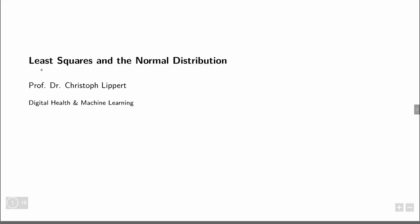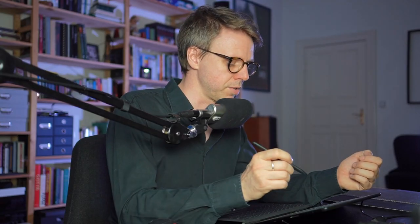Today, we will look again at the normal distribution, but in the context of linear regression. That will be quite useful because we will learn what it means to do least squares, because it really means that we assume that our data in some sense is normally distributed. Let's go right into it.